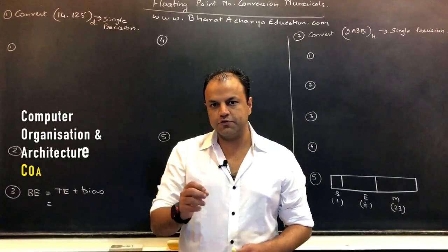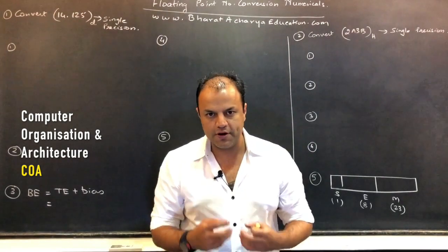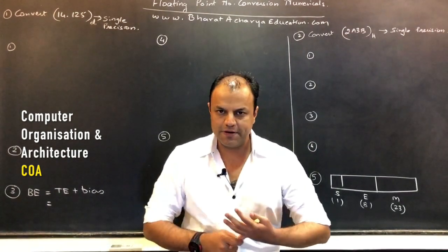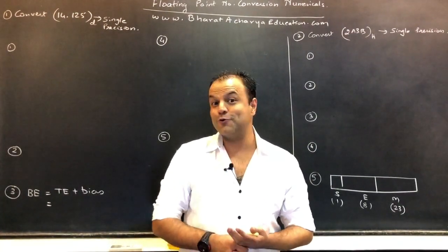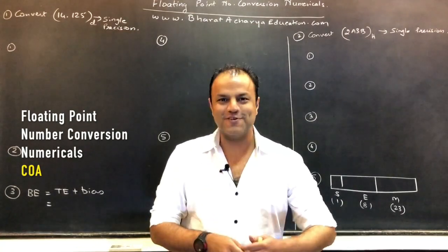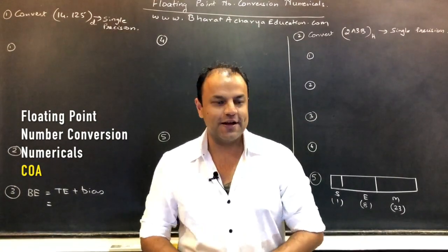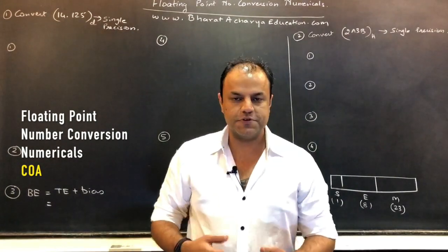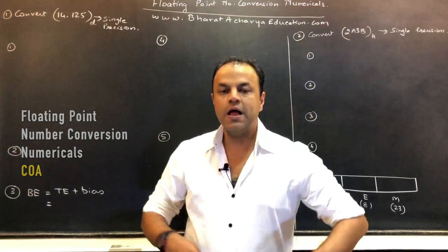Last video, we saw how floating point numbers are represented — the IEEE 754 32-bit format, also called single precision or short real, and the 64-bit format, double precision, called long real.